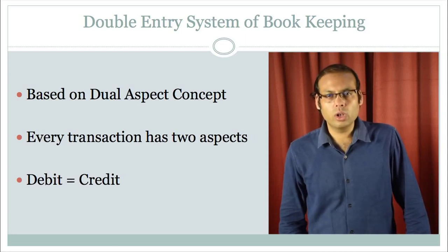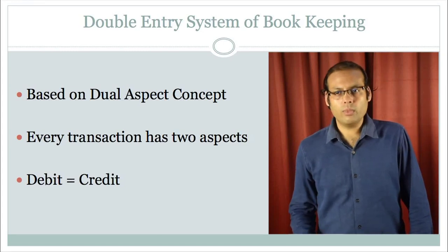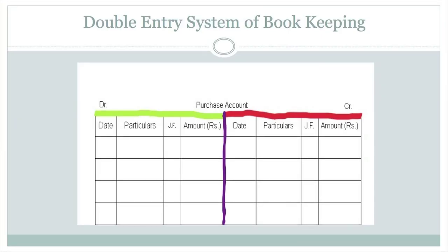Each aspect of every transaction will be recorded in a particular account and a related account. Two aspects will be recorded under the double entry system whenever a transaction takes place in the business, and this debit and credit will be equal. Let us recapitulate the format: on the left side, the debit side DR, we record date, particular, JF, amount; and on the right side, CR credit side, the same columns. Before discussing how to record transactions, let us first discuss the features of this double entry system of bookkeeping.